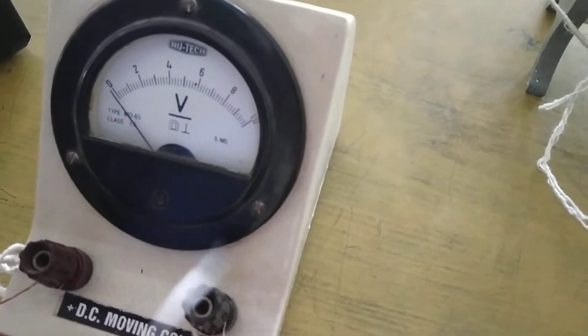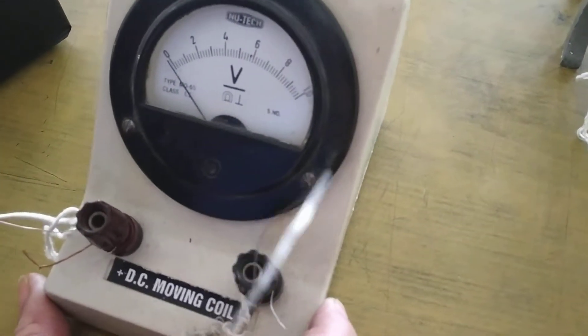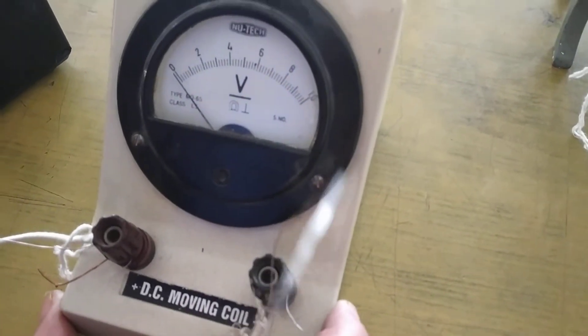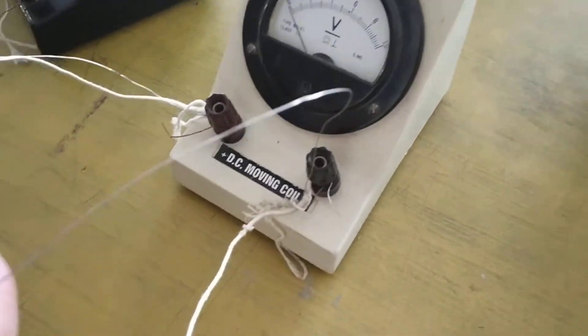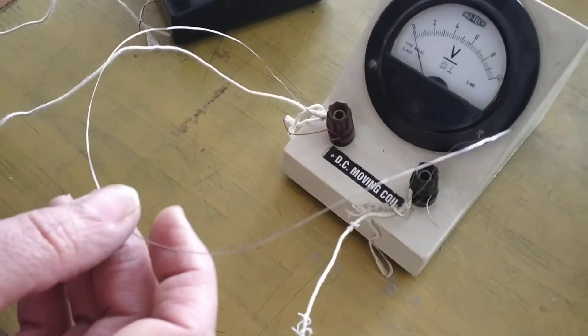This is a voltmeter with a range of zero to ten. It has very high resistance and is always connected in parallel with the resistor whose resistance has to be calculated.